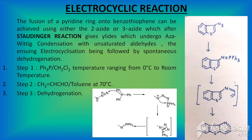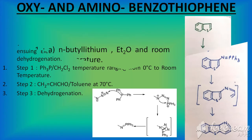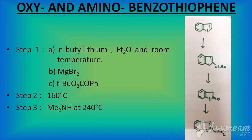The conditions of all the steps have been mentioned. Benzothiophenone 2 is obtained in the second step at 160 degrees centigrade, and finally it converts into methylated amine at 240 degrees centigrade.